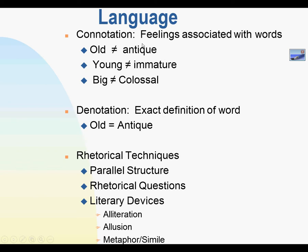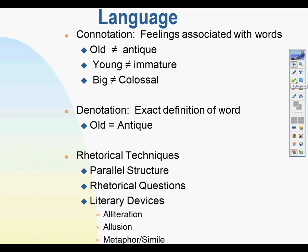Similarly, if you're referring to someone as 'young,' that is either a positive or even a neutral connotation. Yet if the person is called 'immature,' that may be taken in a wrong light and therefore considered negative. So, connotation is the feelings associated with words, whereas denotation is the definition associated with words. Denotation is the literal definition, as opposed to connotation, which has to do with the feelings of the word — be able to differentiate those.